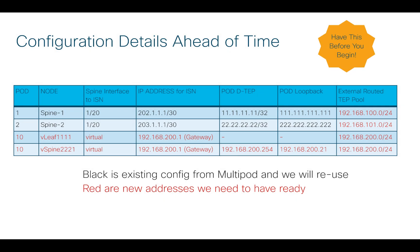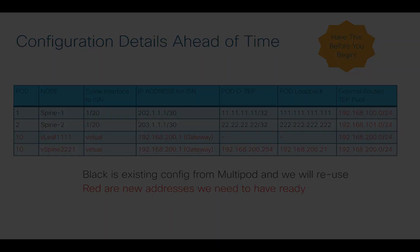Just like anything else you configure, there are always decisions to make about names, interface numbers, and addresses. I've created a cheat sheet with everything I want to have ready before I start configuring. Since multipod is already in place, we can reuse some of those values — shown in black. Anything new needed for VPOD is shown in red. I'll refer back to this cheat sheet multiple times as we configure VPOD, and you should probably have something similar before deploying your own.